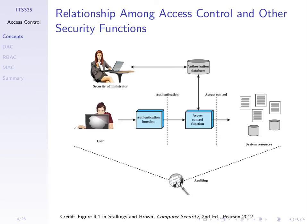We also want to make sure everything works. Say we have an authentication system and an access control function controlling that students can only access a subset of files on our server. The administrator sets up a database saying which files students can and cannot access. Auditing is the process of checking that all of that is working as intended — confirming the access control is working and the database is correct. Auditing checks that once we've set things up, they're working as intended.